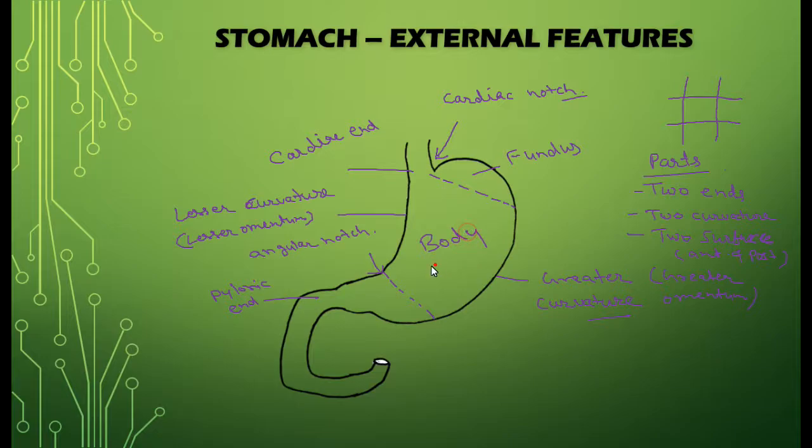And this big portion is known as the body. The lower, smaller portion is the pyloric antrum, and this pyloric antrum continues as the pyloric canal. Lastly, it will end in the pylorus, and at this point it will continue as the duodenum.